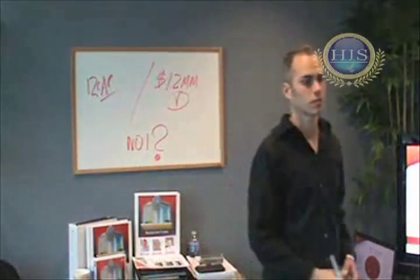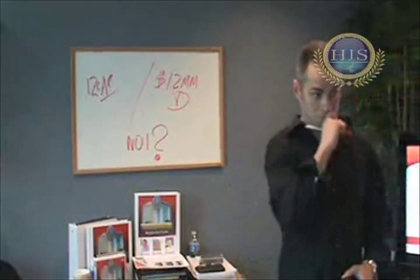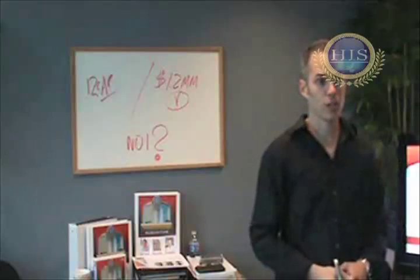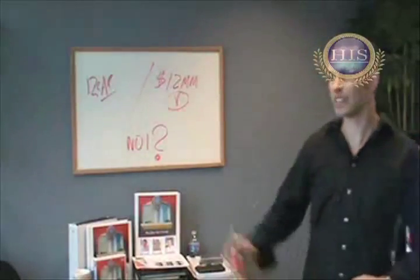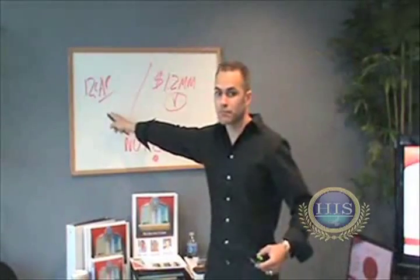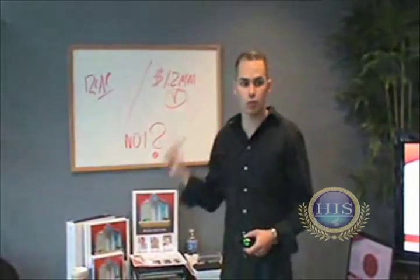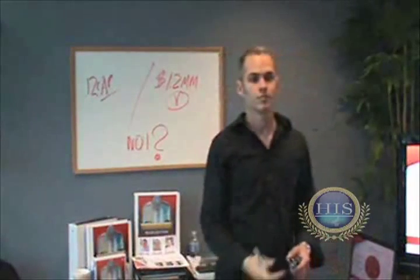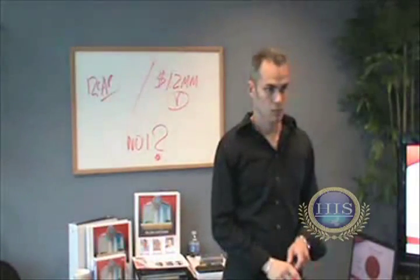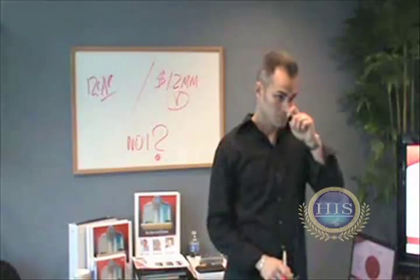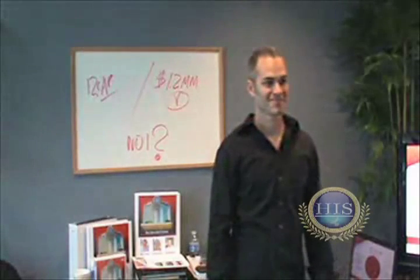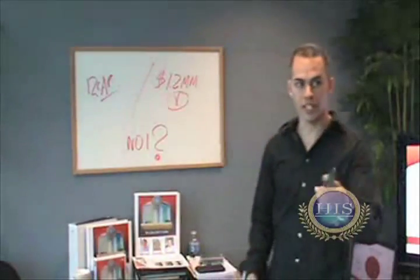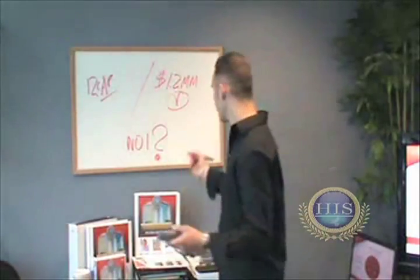That's the big question — how do we do this? Run your numbers, use your calculator. Give me an exact figure. If I'm going to get a 12 cap and the purchase price is $1.2 million, what should my NOI be? A hundred and forty-four thousand. Everybody getting that? A hundred and forty-four.